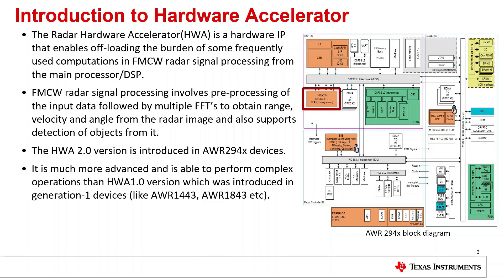First, the introduction. The radar hardware accelerator is a hardware IP that is tightly coupled to the DSP and offloads the burden of frequently used computations in FMCW radar signal processing from the DSP or main processor. FMCW radar signal processing involves pre-processing of input data followed by multiple FFTs to obtain range, velocity, and angle from the radar image, and also supports detection of objects. The Hardware Accelerator 2.0 introduced in AWR294X Gen 2 devices has more advanced features than Hardware Accelerator 1.0 in Gen 1 devices. The diagram on the right shows the Hardware Accelerator's position in AWR294X devices.